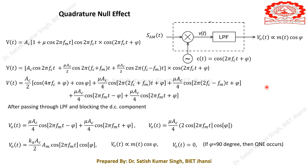Welcome to the sixth lecture of the course module Communication Engineering. Please go through all the previous lectures since they are connected to each other. In the last lecture, we covered the demodulation of an AM wave for a single-tone modulated signal using coherent modulation. We also saw the quadrature null effect, where a 90-degree phase difference between transmitter and receiver carrier causes the message signal to be completely lost.